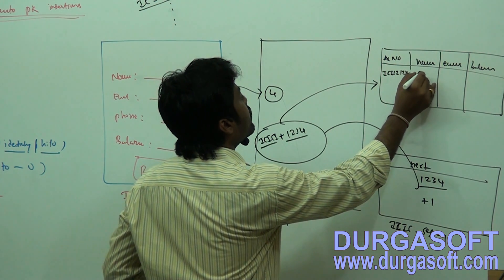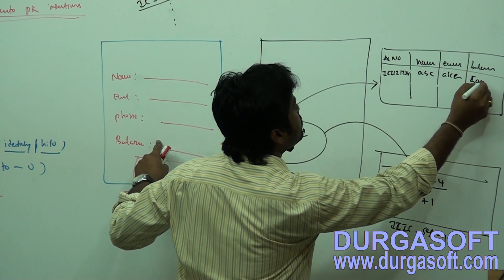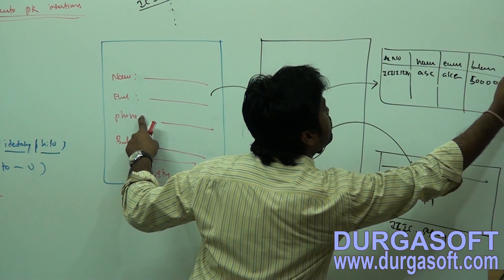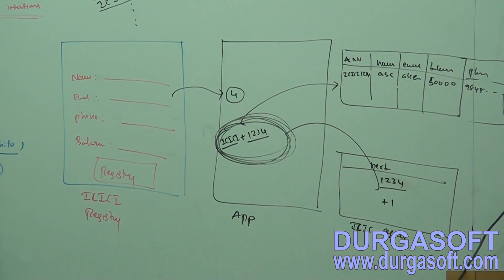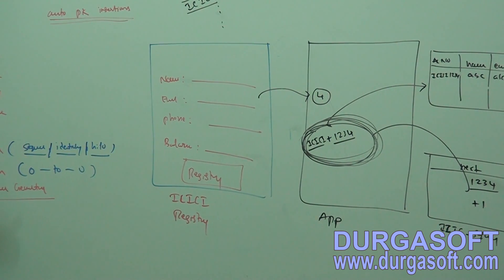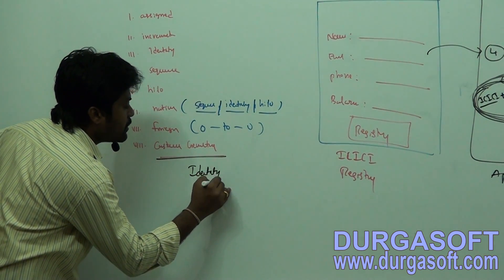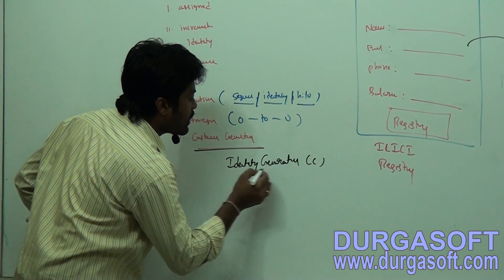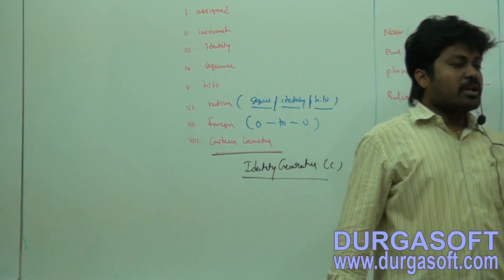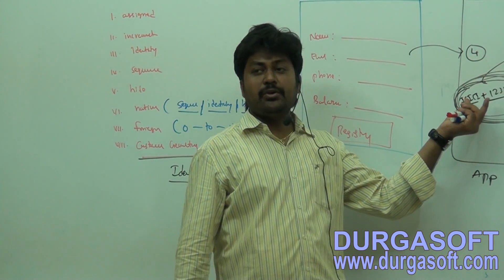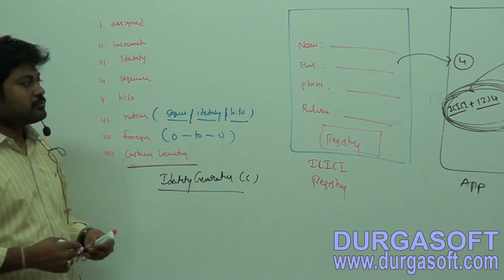The account number ICICI001, ICICI002, etc. would be constructed from the sequence value appended with the ICICI prefix, along with account holder name, email, balance, and phone number. This kind of incrementation technique can be implemented using a custom generator. To implement that custom incrementation, you need to implement your custom generator class by extending the IdentityGenerator class, get the required number from the sequence, append it to the string, and finally use that complete string as the primary key in your database.